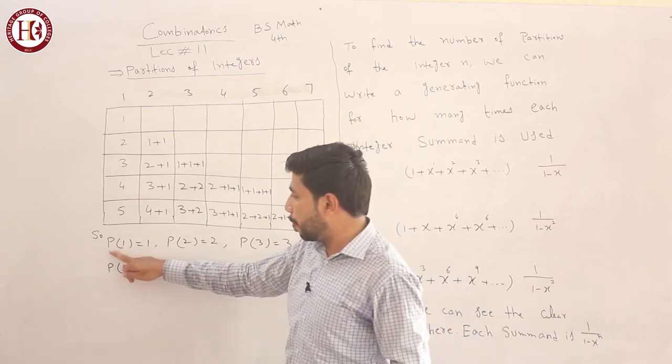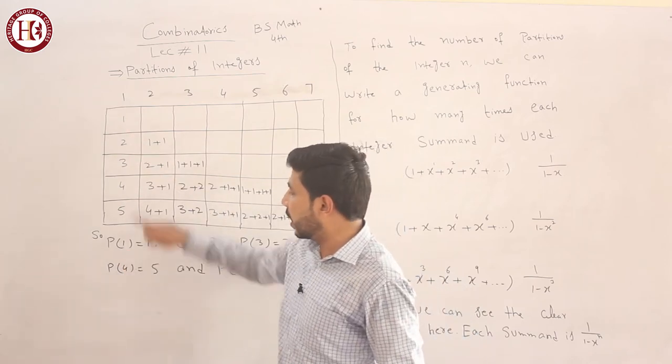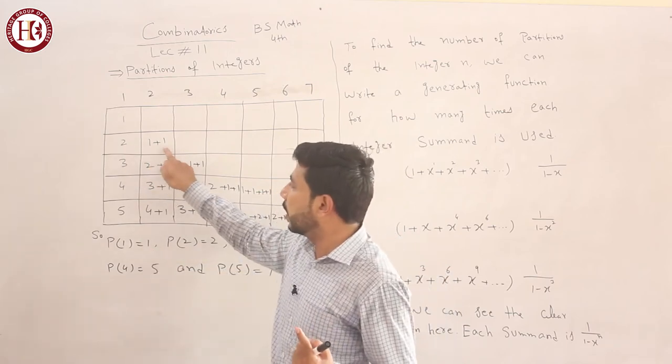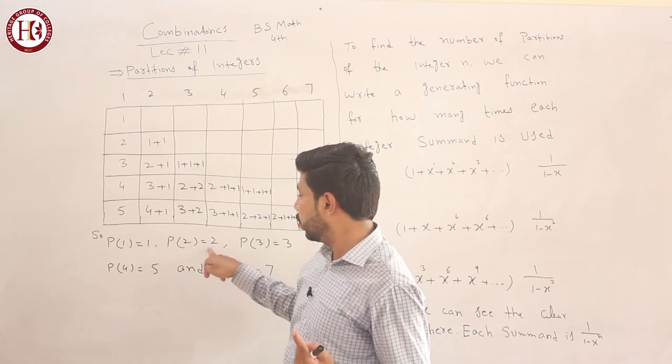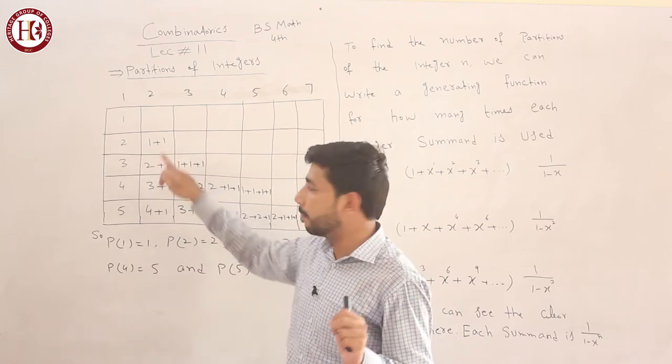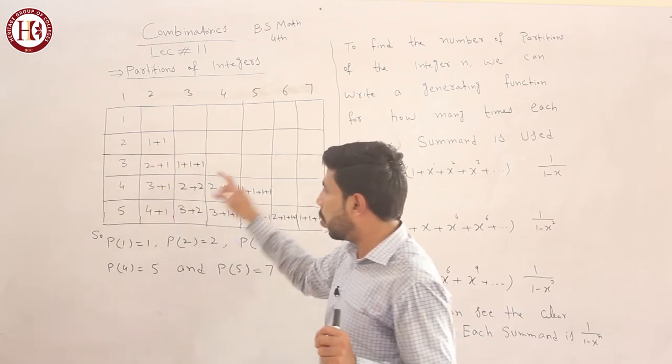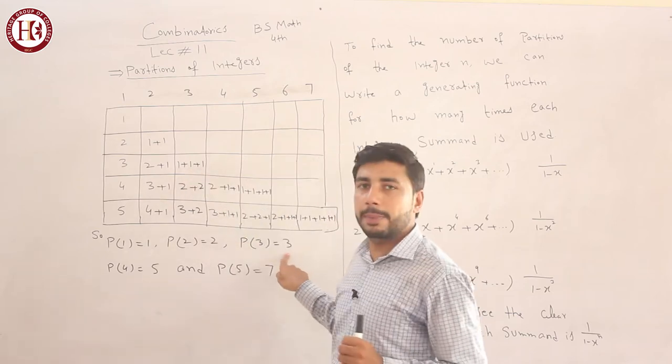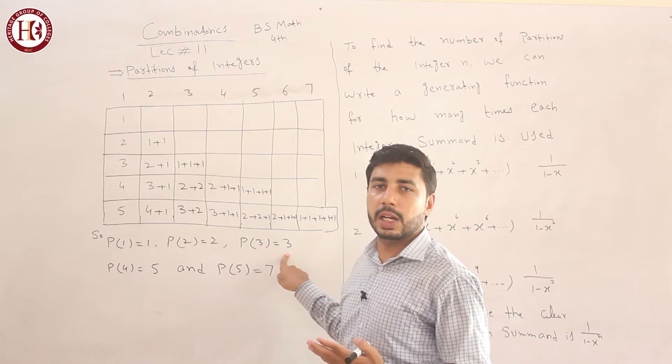Now, P(1) - how many times can we partition it? 1 time. Partition of 2 - how many times? You have 2 ways. Partition of 3 - how many ways? 1, 2, 3. Three partitions. What will your answer be? 3.